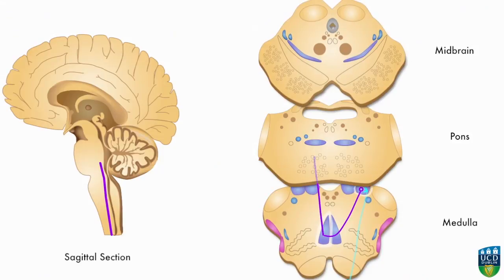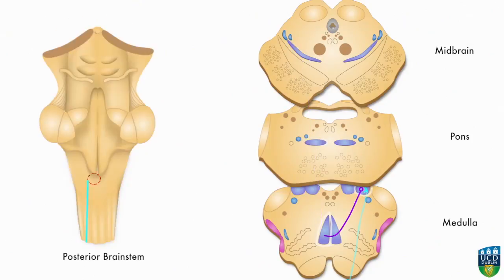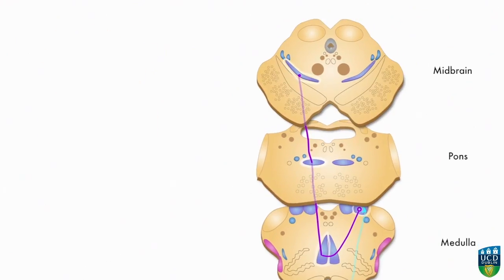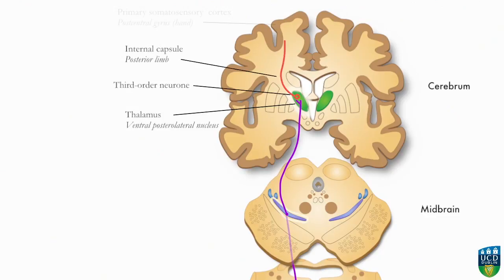The second order neuron continues to carry the impulse upwards to the midbrain via the medial lemniscus. From the midbrain, the second order neuron carries the impulse to the thalamus, where it terminates by synapsing on the third order neuron. The third order neuron carries the impulse to the appropriate area of the primary somatosensory cortex.